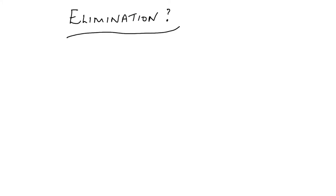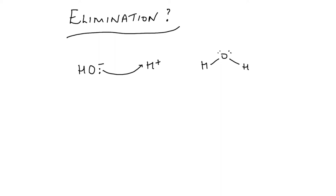In this video I'm going to look at elimination reactions and haloalkanes. In order for a haloalkane to undergo elimination, we need a base. A good example of a base is the hydroxide ion. It can behave as a base because it's able to accept a proton — it uses its lone pair of electrons to make a dative covalent bond to a hydrogen ion, and in this example we end up with water.